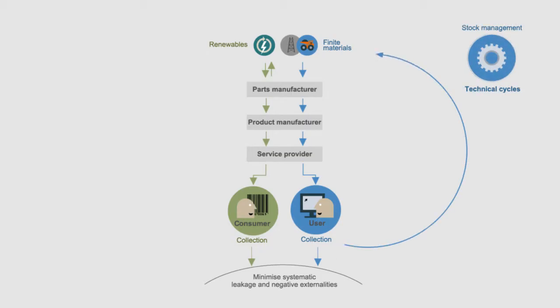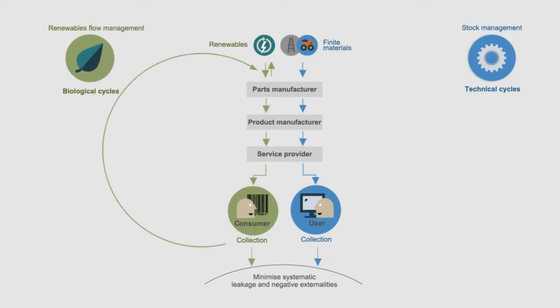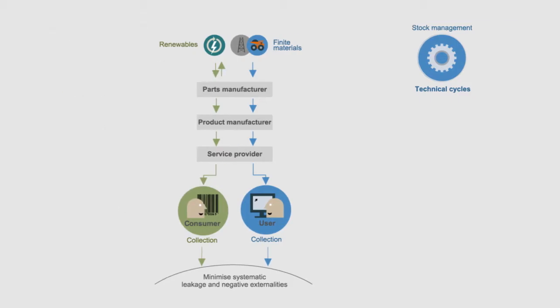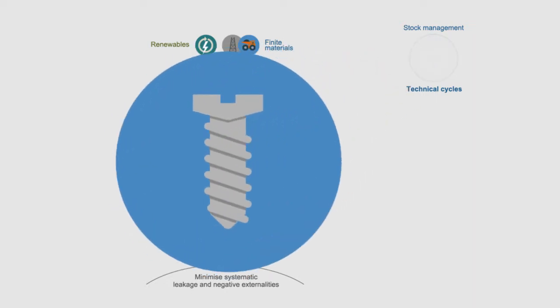In the technical cycles, products, components and materials are kept in circulation in the economy for as long as possible. In the biological ones, the strategy is to restore nutrients into the biosphere while rebuilding natural capital. Technical cycles are usually for products made from non-biodegradable materials such as metals.